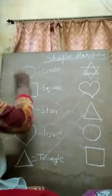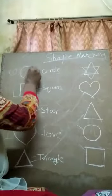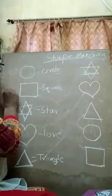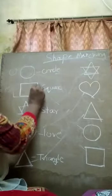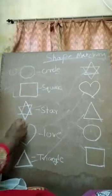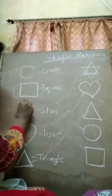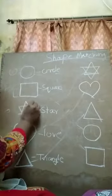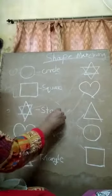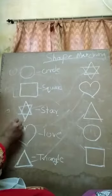First one is circle. This one is circle. Next one is square. This one is square. Next one is star. Next one is love.